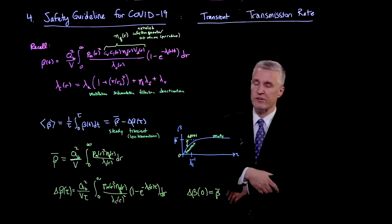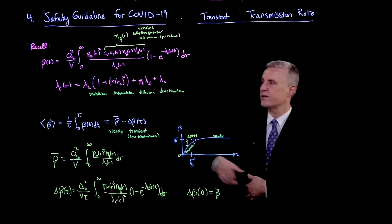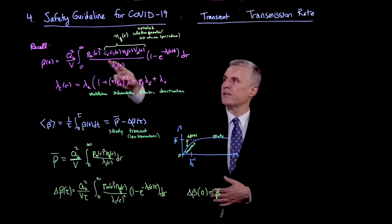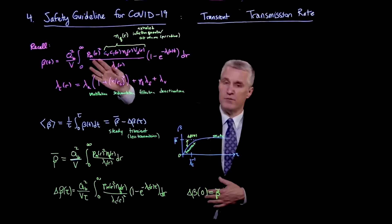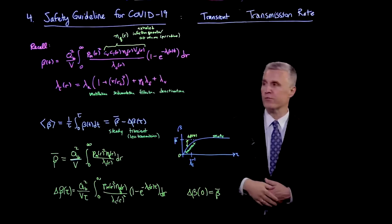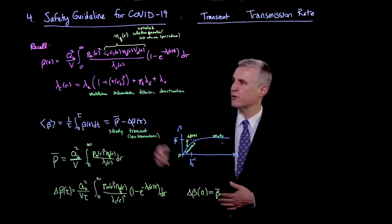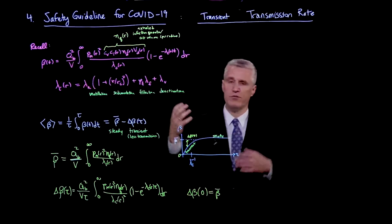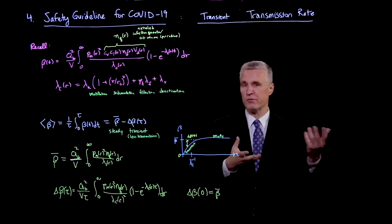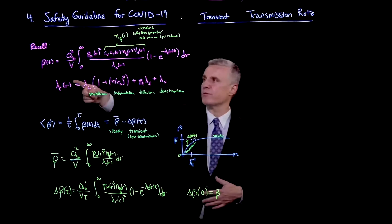The transmission rate is a function of time, is an integral over all the droplet sizes, and then you have here the mask filtration factor which depends on size, pm. You have the breathing rate qb that comes in squared because there's one person breathing out and another person breathing in. You've got the volume of the room.